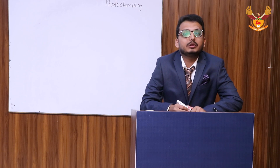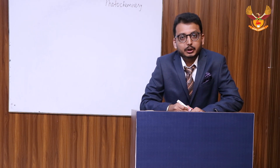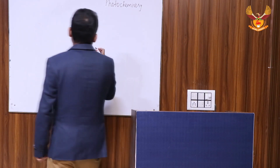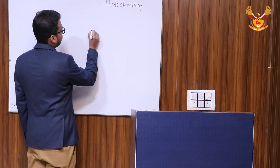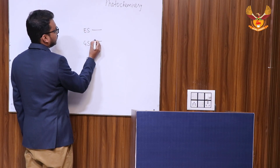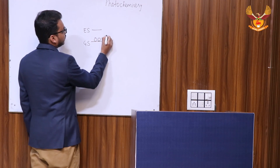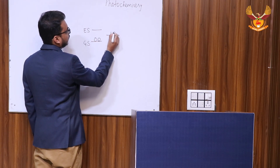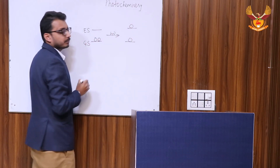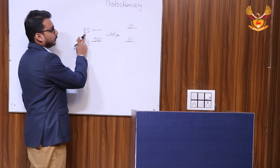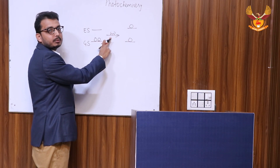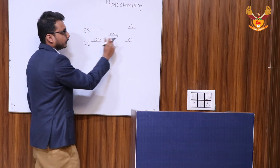In this topic, I am going to first tell you what is the fate of a molecule when it comes across light. I will take an example — this is our ground state and this is our excited state. A molecule in the ground state gains or absorbs light and moves to the excited state. From ground state to excited state, the transfer of molecule takes place only by absorption of light.